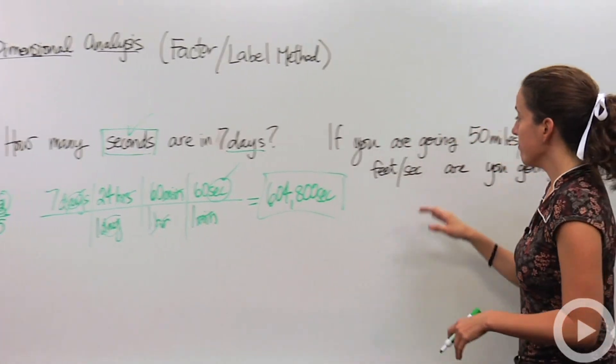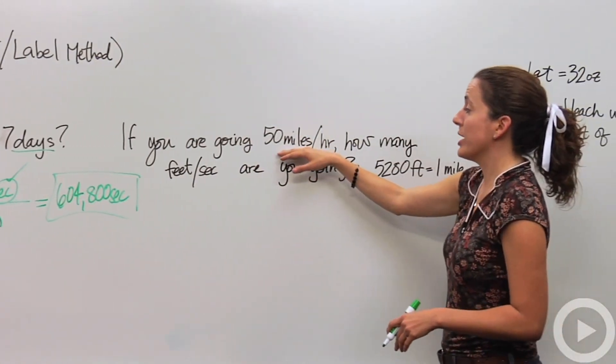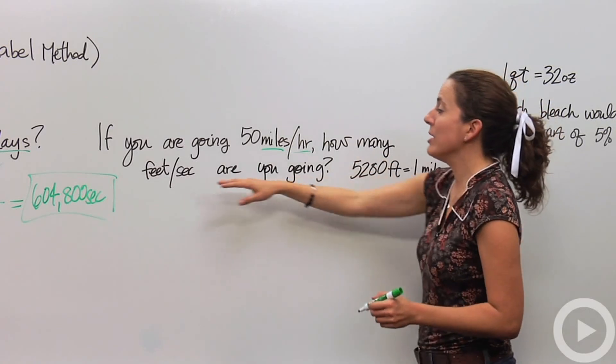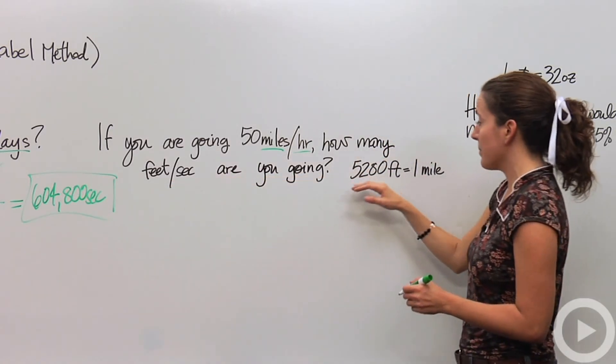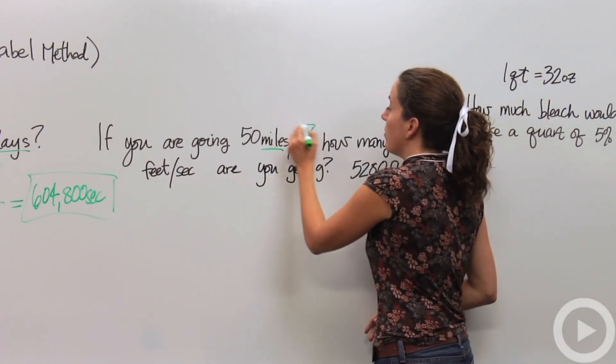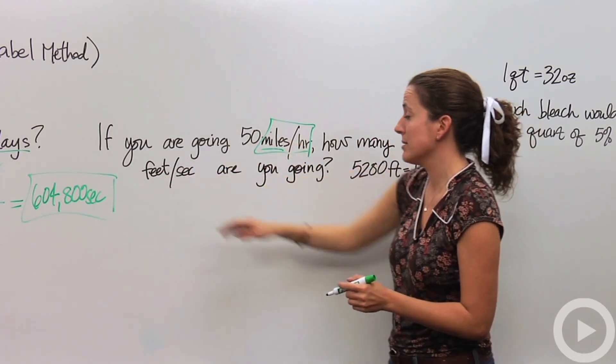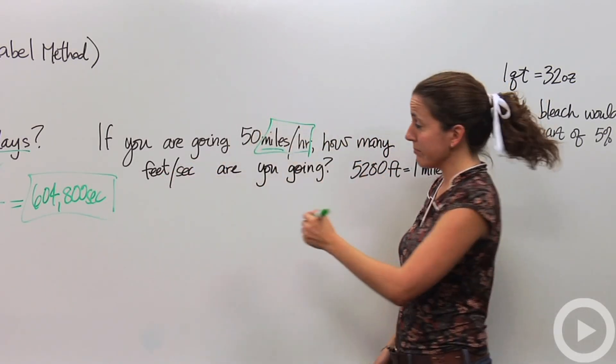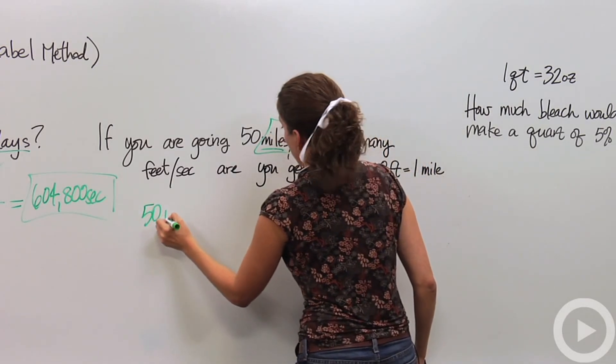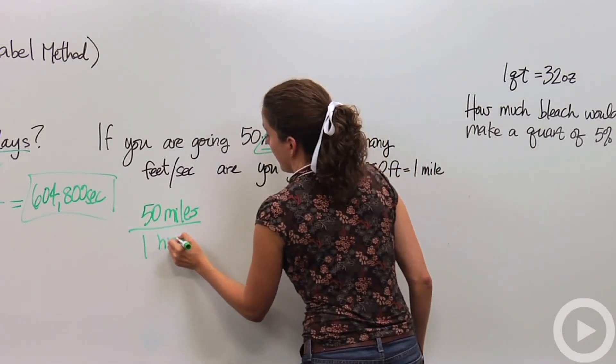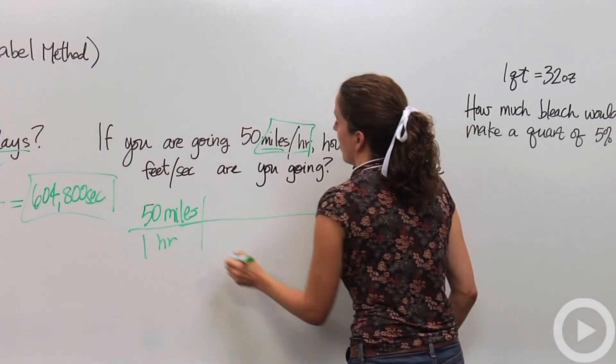Let's do something a little bit harder. Let's say we're changing two units. So if you're going 50 miles an hour, how many feet per second are you going? So we know we're going from miles to feet and from hour to seconds. So the first thing we're going to do is write down our given. We're going to write down 50 miles per one hour.